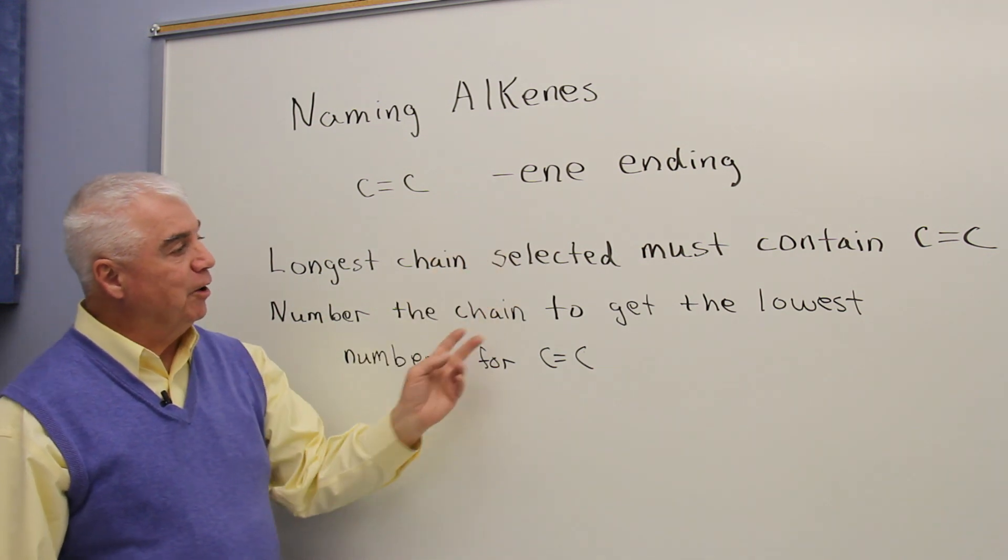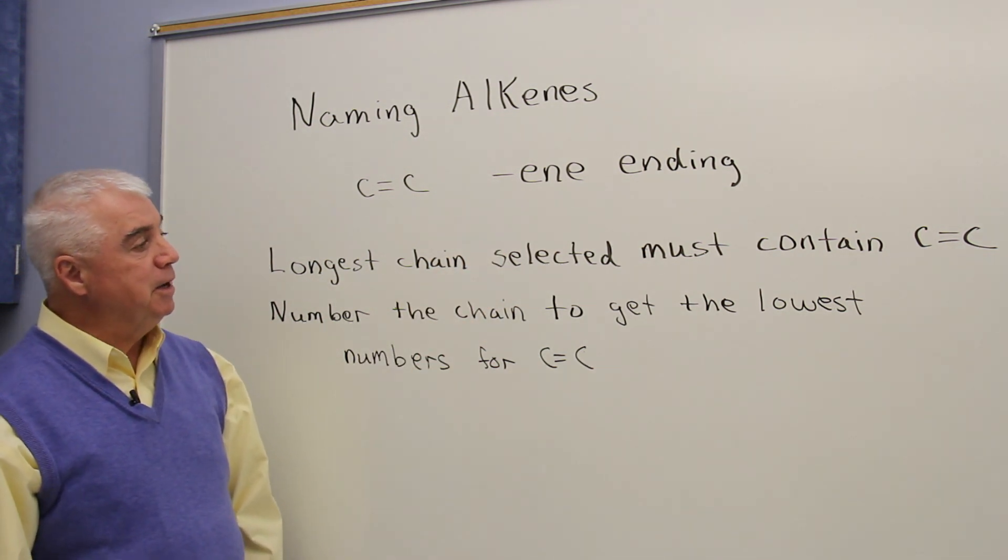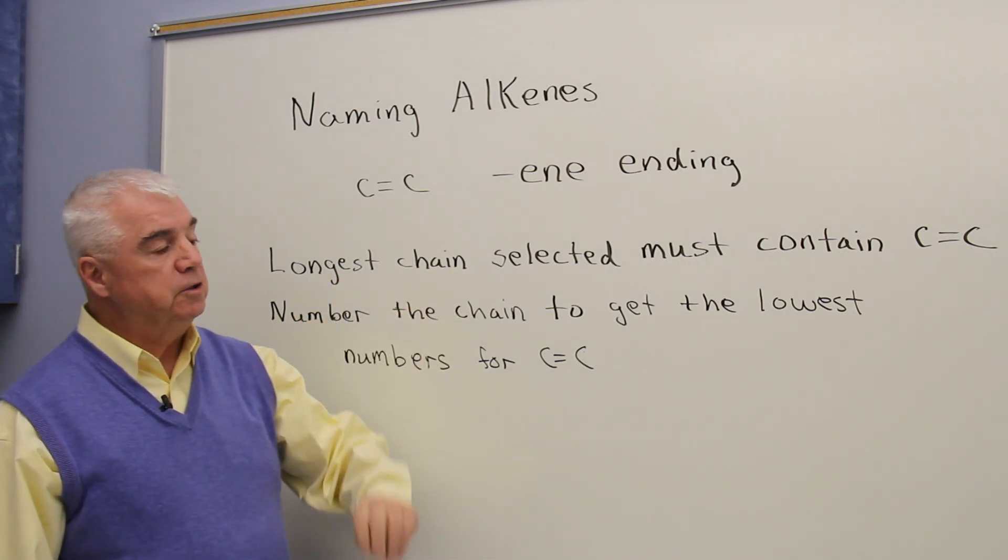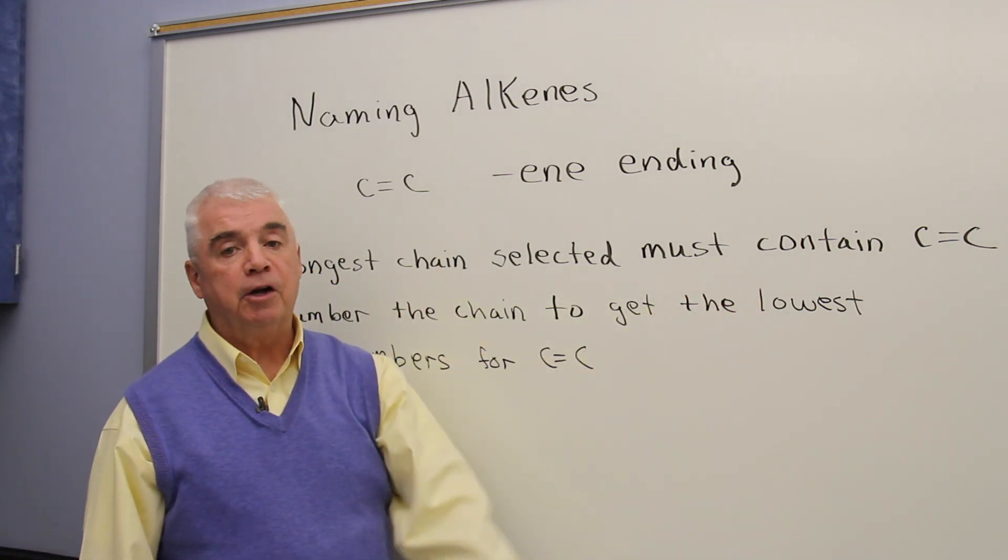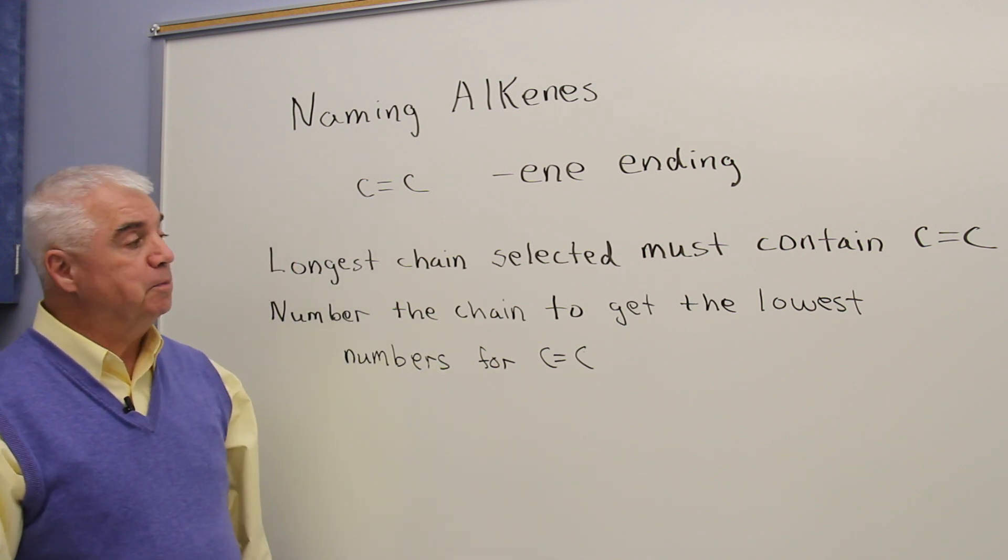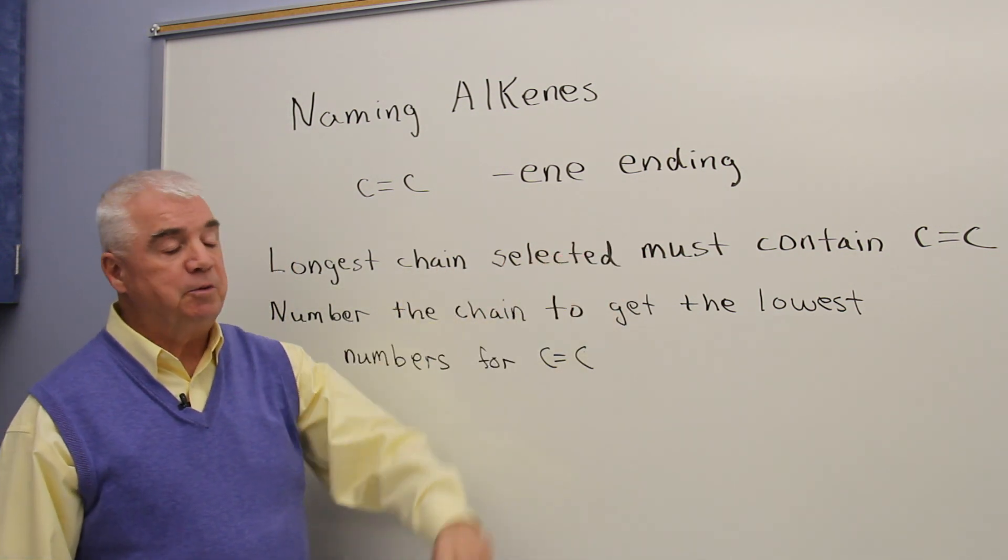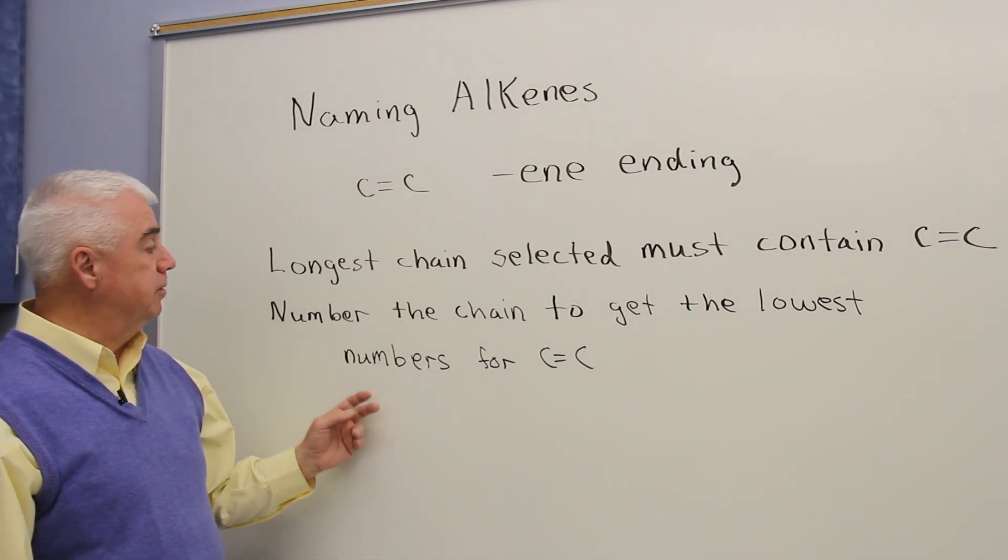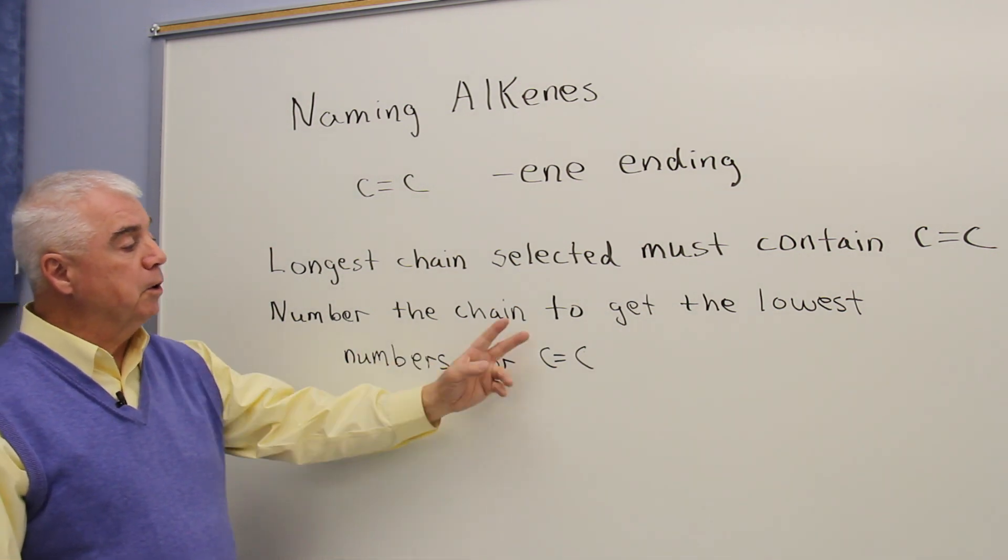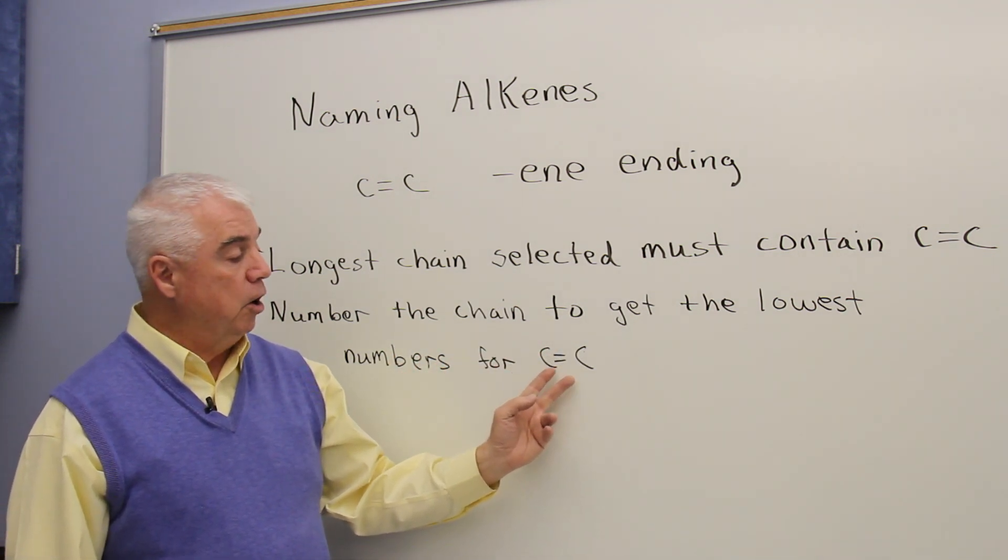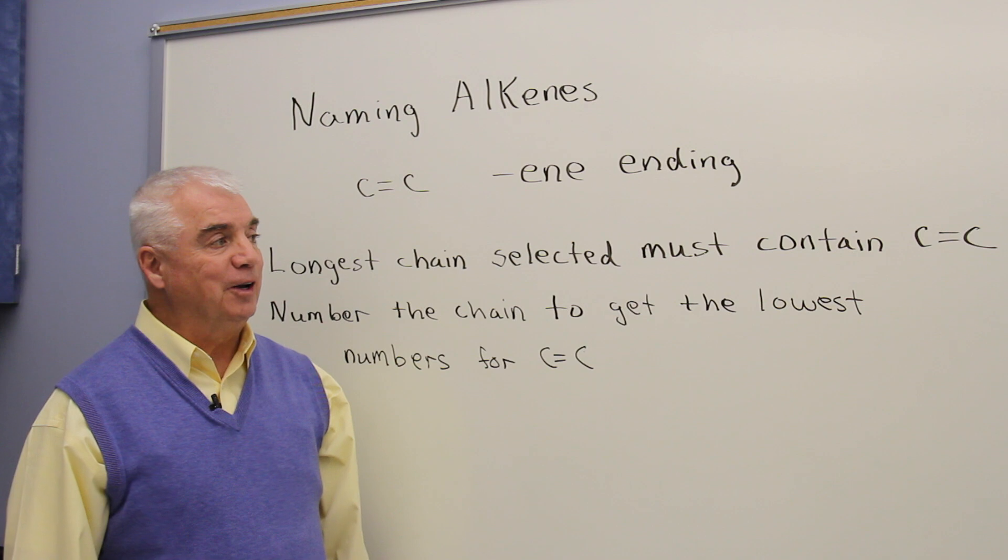There are two other differences between naming alkanes and alkenes. With alkenes, the longest chain selected must contain the carbon-carbon double bond. There might be longer chains, but the base word has to be the chain that contains that carbon-carbon double bond. And then when we number the longest chain, we want to get the lowest number for the positions of the carbons involved in the double bond.